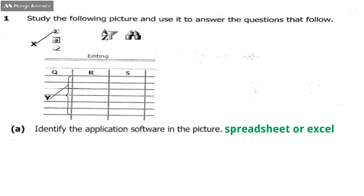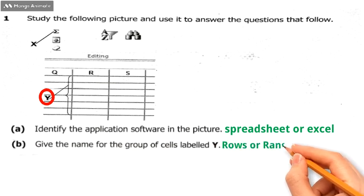We've got question number 1b which is give the name for the group of cells labeled Y. Y is there, the one I've circled, so that is what we call those cells. Those cells are called rows, or you can also call them range. They are rows or range.